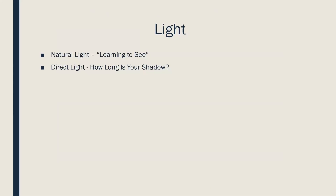Let's move on to our second element: light. Photography is the art of capturing light — whether you're doing landscapes, macro, birds, or people, it's all about light. We have to learn to see light as photographers. Light has quality, direction, intensity, and color, and all of these determine the types of images we ultimately get.